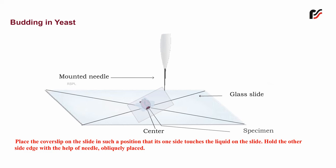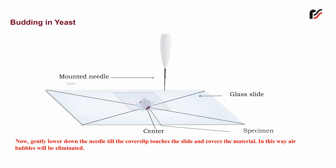Hold the other side edge with the help of a needle obliquely placed. Now gently lower the needle till the coverslip touches the slide and covers the material. In this way, air bubbles will be eliminated.